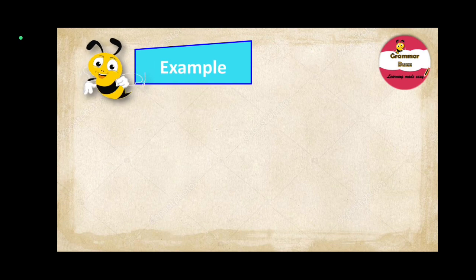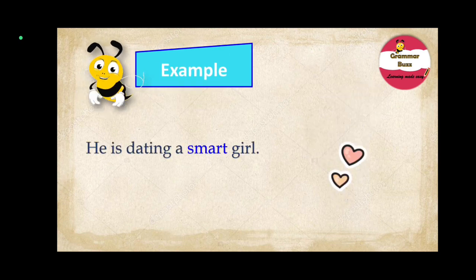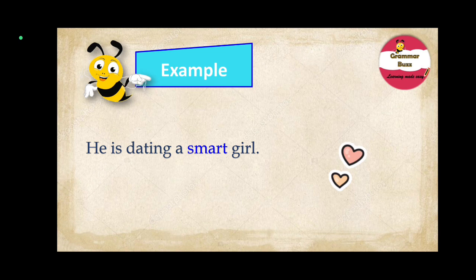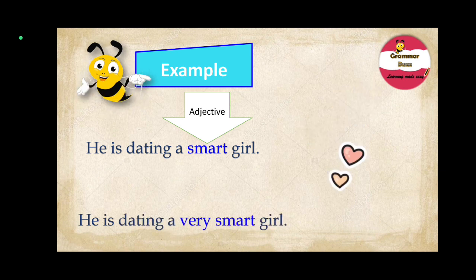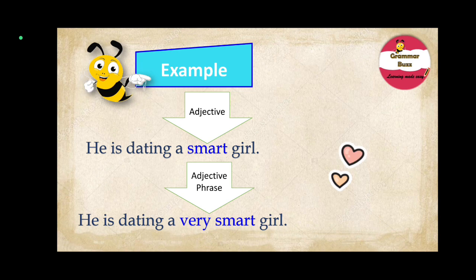Let us now take an example. He is dating a smart girl. In this sentence, 'smart' is an adjective that modifies the noun 'girl.' Now take a look at this sentence: He is dating a very smart girl. Here, 'very smart' is an adjective phrase that also modifies the same noun 'girl.' So both the adjective and the adjective phrase are doing the same work of modifying the noun in the sentence.